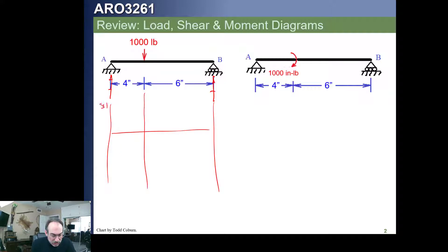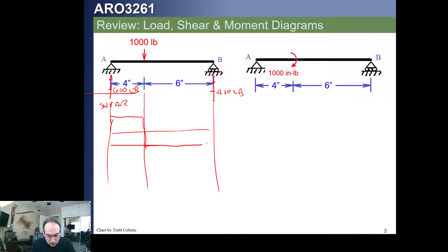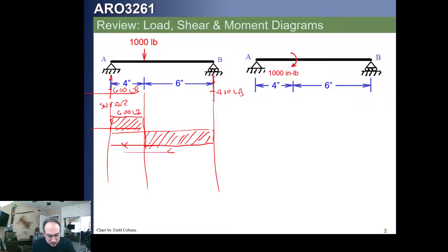If this is our shear diagram, and if we calculate our reactions, we're going to find out we need a 600-pound reaction and a 400-pound reaction. This means this 600-pound reaction is going to push the shear up to 600. It's not going to change until we hit the 1,000, which pushes it down by 1,000, leaving 400 here and closing that off. This is 600 pounds, this is 400 pounds, and that's our shear diagram.